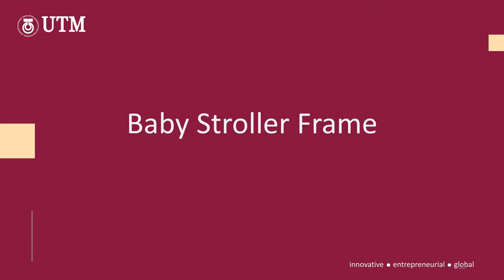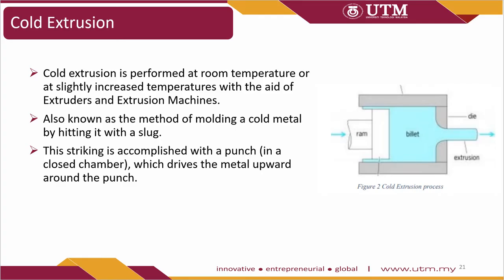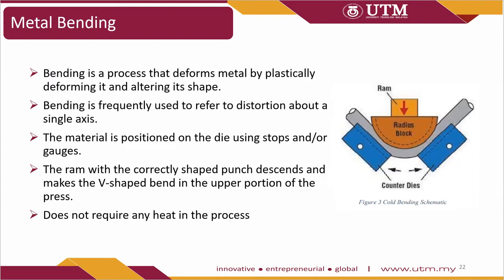For the stage of processes for the baby stroller frame, cold extrusion is performed at room temperature or slightly elevated temperature using extruders and extrusion machines. It is a method of molding cold metal by hitting it with a slug, accomplished with a punch in a closed chamber that drives the metal upward around the punch. Metal bending is a process that deforms metal plastically and alters its shape, frequently used to refer to distortion about a single axis. The material is positioned in the die, and a V-shaped bend is made using a correctly shaped punch. It does not require heat.